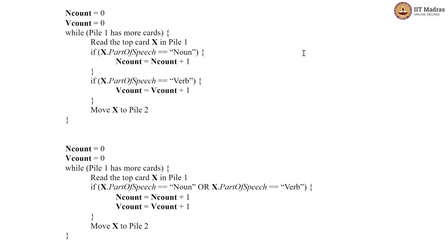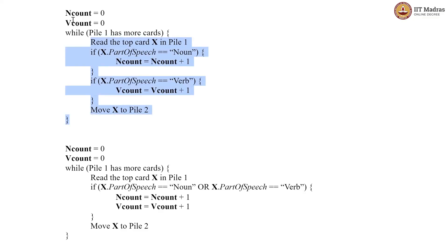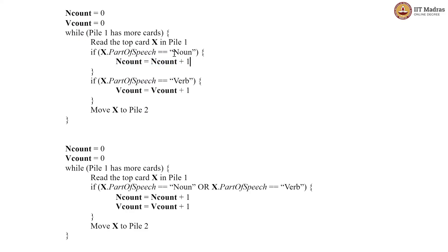Here is another example where an OR statement is not equivalent to two separate if statements. We are initializing two variables, ncount and vcount, to 0. These represent noun count and verb count in the word dataset. While pile1 has more cards, we read the top card. If the part of speech is a noun, we increment ncount. If the part of speech is a verb, we increment vcount. Then we move card x to pile2. This code gives you a count of nouns and count of verbs separately.